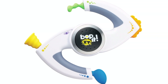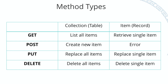Next concept: anybody know what Bop It is? It's a little game where it says 'Bop it,' then 'pull it,' and you have to do those specific actions. If you try the wrong one, you lose. Essentially, they're just different methods of doing an interaction with the system. How is that related to APIs? There are different methods in API calls as well. There are four common ones, and the first two account for probably 90% of APIs.